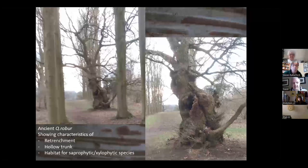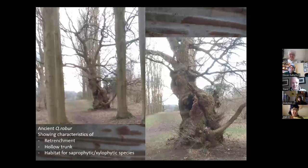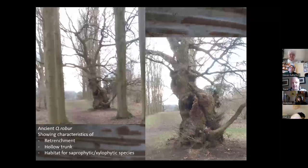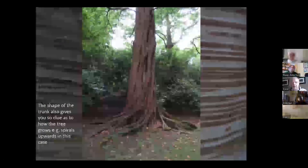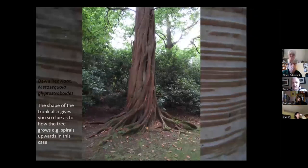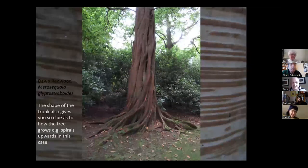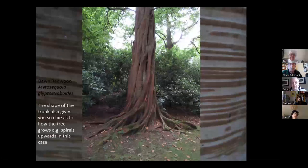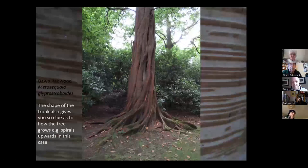We've fenced this tree off with ropes to stop soil compaction, though we also had trouble with visitors depositing dog poo bags in the centre of the tree. It's now much better protected. An ancient tree can last a couple of hundred years in that ancient form. The form of the trunk also gives a good idea of how the tree has grown — this is a dawn redwood, Metasequoia glyptostroboides, whose trunk has spirals going up as the tree revolves at its meristem at the top.